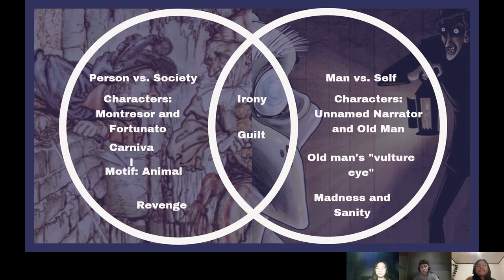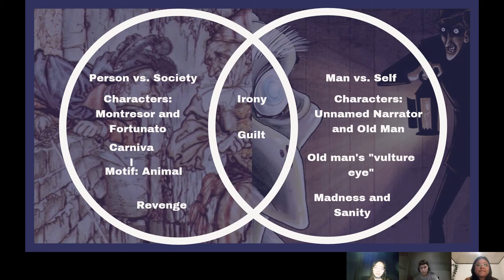Both short stories possess the elements of guilt and irony. In The Cask of Amontillado, Montresor wanted to kill Fortunato for revenge, but arguably he felt guilty when he blamed the dampness of the catacombs for his heart growing sick as he walled Fortunato in. Another evidence of guilt was when he stated that he struggled with the final stone. In The Telltale Heart, the killer clearly had guilt. As the story progresses, the murderer confessed to the crime because of being tormented by his guilty conscience. This story clearly shows that guilt is a huge factor in its outcome.